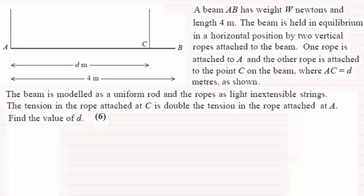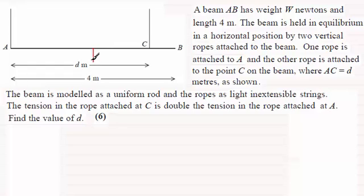Welcome back. We've got to find this length d meters between A and C. Before we start, let's put some forces acting on this beam AB. We're told it's a uniform beam and it has weight W, so that means the weight acts in the middle. There's W newtons, and because it acts in the middle and the length of the beam is four meters, this distance will be two meters.